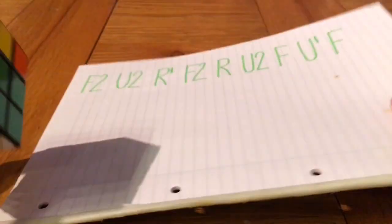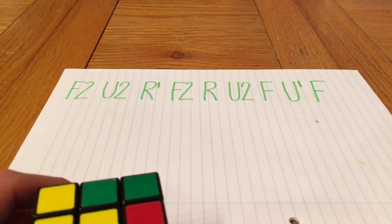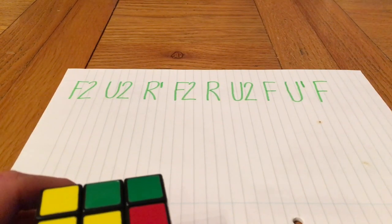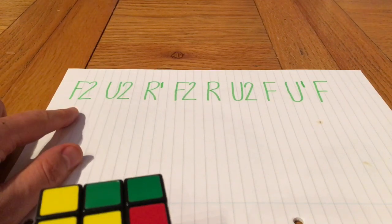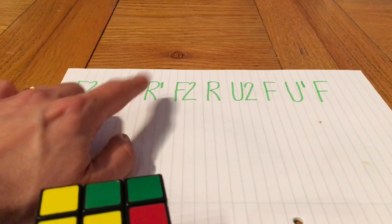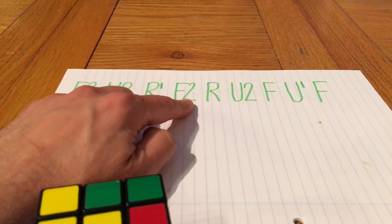Here's the algorithm: F2 U2 R' F2 R U2 F U' F. What that means, if you know your notation, which you should do if you've learnt to solve in the beginners method, that means a half turn on the front face, then a half turn on the top face, an anti-clockwise quarter turn on the right, then a half turn on the front face.